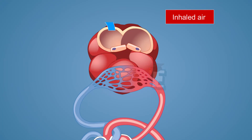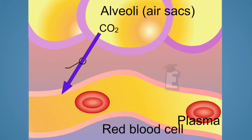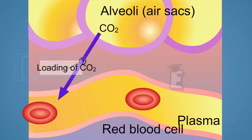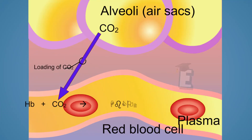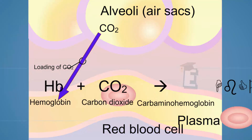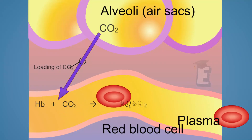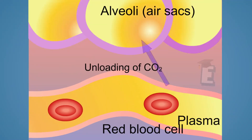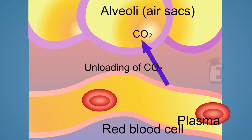The remaining 25 percent of carbon dioxide is bound by the hemoglobin. This bond is called carbaminohemoglobin. When it is already in the lungs, the bond is released and the carbon dioxide diffuses to the alveolus.